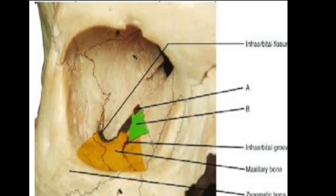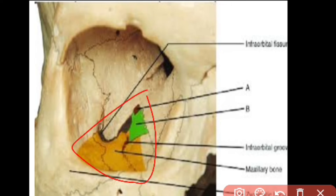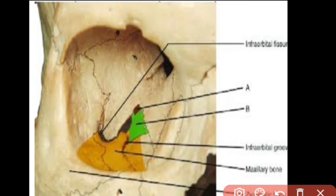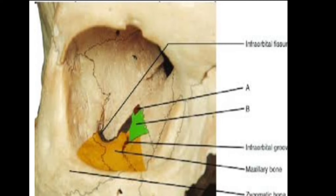Moving on to the inferior wall — the floor of the orbit. It is triangular in shape and formed by three bones: the orbital surface of the maxillary bone, the orbital surface of the zygomatic bone, and the palatine bone.